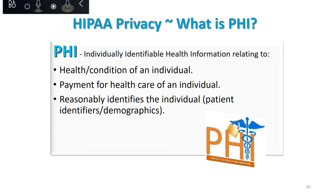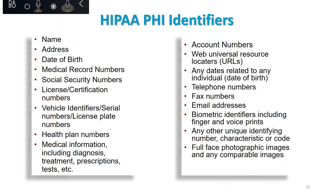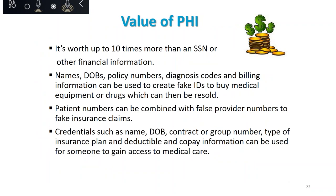Brad already touched on HIPAA privacy and what PHI is. It's important that you understand and review the 18 different HIPAA PHI identifiers. A lot of people think protected health information has to involve a diagnosis or something medical, but that's not necessarily the case. For example, a form from DHS with a member's name, address, birth date, and Medicaid ID number on it is also protected health information, and we must send breach notification letters if it goes to an unauthorized person.